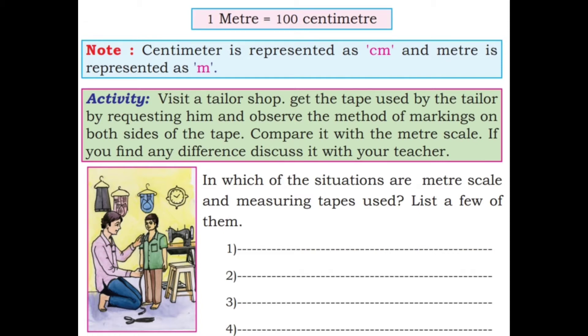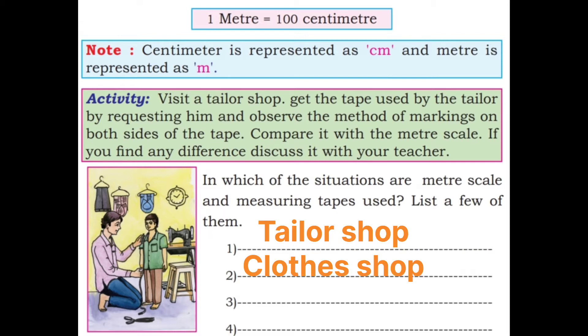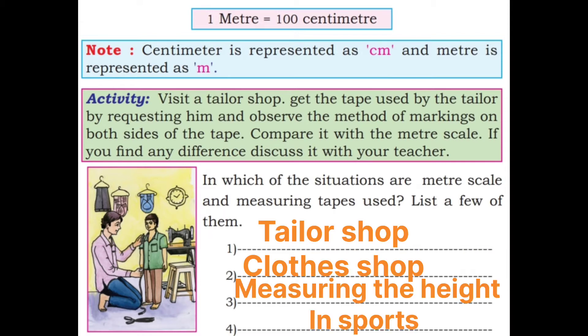In which situations are meter scale and measuring tapes used? List a few of them. In these situations you can use measuring tape or measuring scale. For example, in a tailor shop, in sports, in a 100-meter or 200-meter running race, and in a clothes shop.